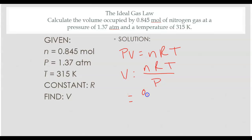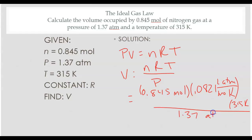So we'd have 0.845 moles. Our constant is going to be 0.0821 liter atmosphere mole Kelvin. Our temperature 315 Kelvin and then our pressure 1.37 atmospheres.